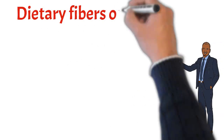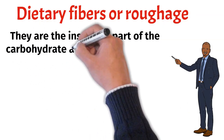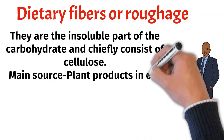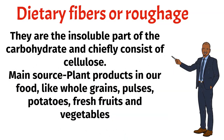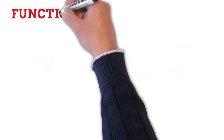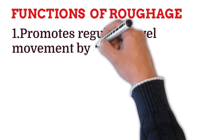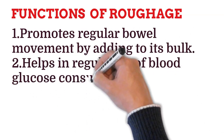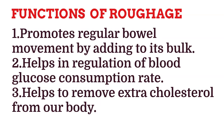Dietary fibers, also called roughage, are the insoluble part of carbohydrates and chiefly consist of cellulose. Their main sources are plant products in our food like whole grains, pulses, potatoes, fresh fruits, and vegetables. Functions of roughage: it promotes regular bowel movement by adding bulk, helps in regulation of blood glucose consumption rate, and helps to remove extra cholesterol from our body.